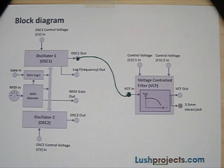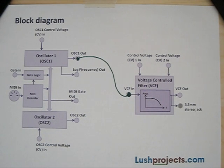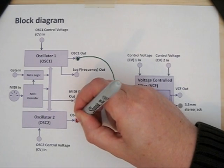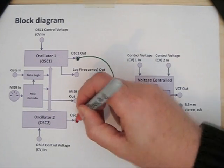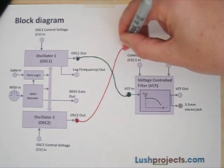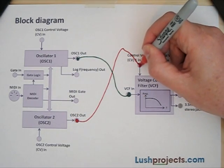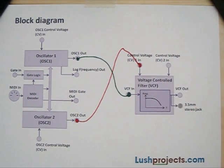Oscillator 2 is normally configured as what's called a low frequency oscillator or LFO, which means it plays a frequency too low to be a normal musical note but is good for modifying or modulating the sound coming out of Oscillator 1. We're going to add one new patch lead from Oscillator 2 output all the way through to control voltage 1 input on the filter.